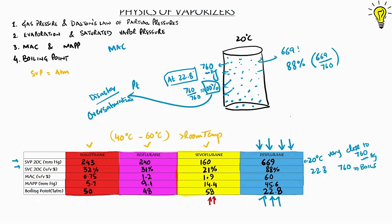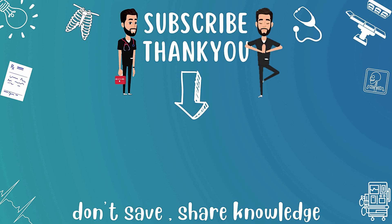I wanted to add types of vaporizers and variable bypass vaporizers to this episode, but we have already covered a lot of concepts. Retain these concepts clearly to understand the working of vaporizers, which is coming up next. If there are any questions, write them down in the comment box. Do share and subscribe — it means a lot. Thank you and see you next time.